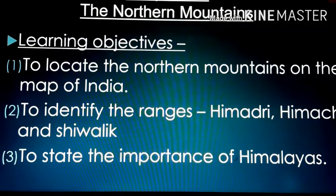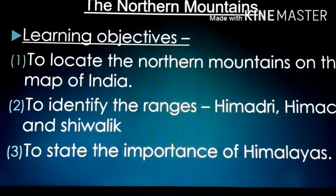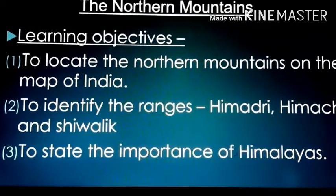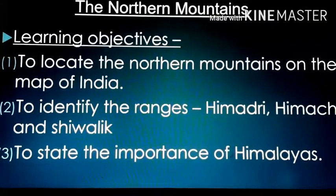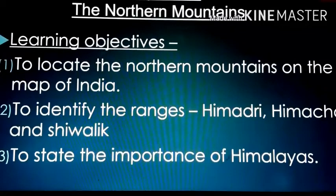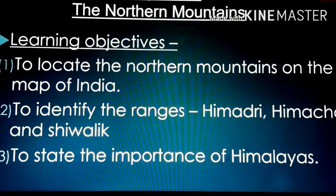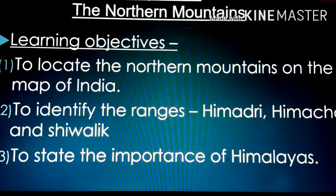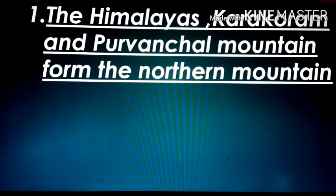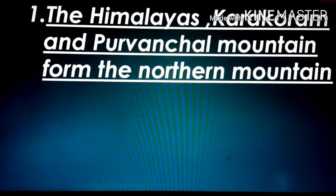In this chapter, the main learning objectives are: to locate the northern mountains on the map of India, to identify the ranges Himadri, Himachal, and Shivalik, and third, to state the importance of the Himalayas. The Himalayas are formed by three hills — the Himalayas, Karakuram, and Purvanchal mountains.